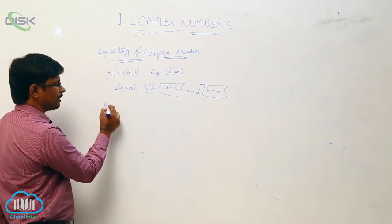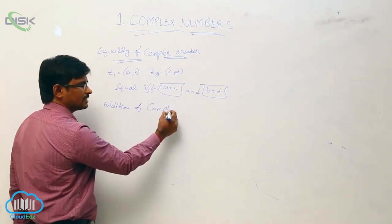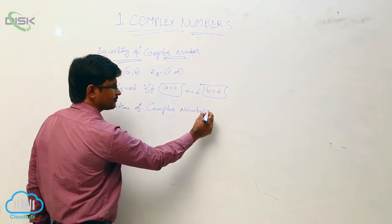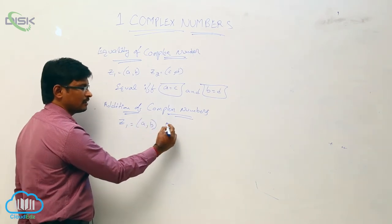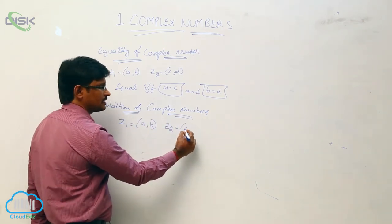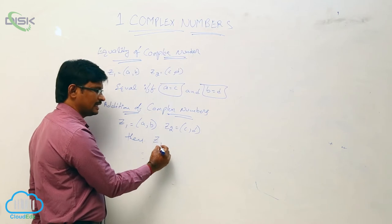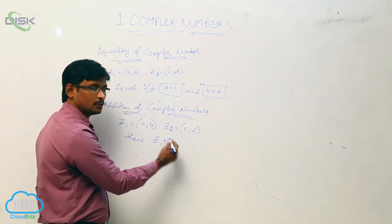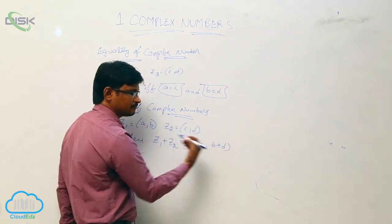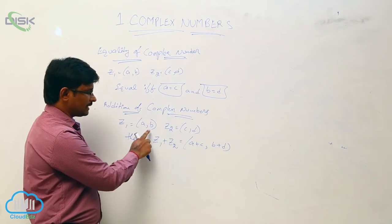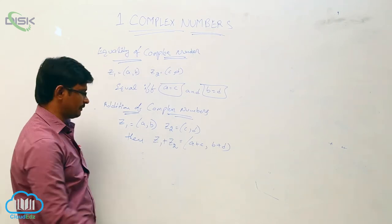Next, addition of complex numbers. Let two complex numbers be considered: Z1 equal to A comma B, and Z2 equal to C comma D. Then the addition of complex numbers Z1 and Z2 is denoted by Z1 plus Z2 and is defined as A plus C comma B plus D. Observe it — we are adding corresponding elements, that is A plus C comma B plus D.